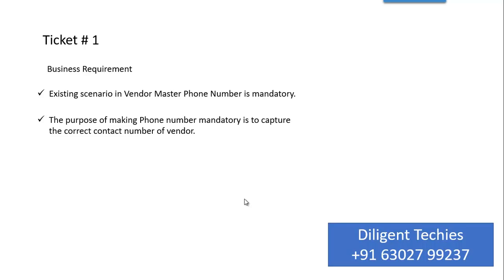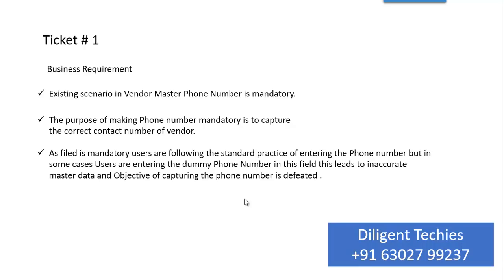The main purpose is to have the correct contact number. Now what is happening in the business is that as the field is mandatory, users are following the standard practice of entering the phone number. But in some cases, users are entering a dummy phone number in this field. This leads to inaccurate master data, and the objective of capturing the phone number is defeated.